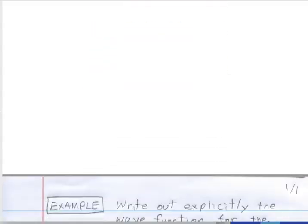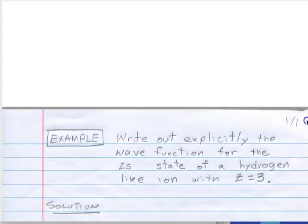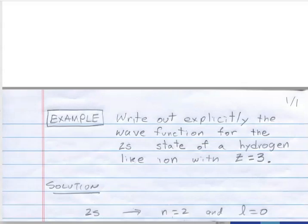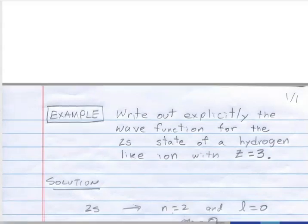Another simple problem, and this one you've probably seen problems like this before. Write out explicitly the wave function for the 2s state of a hydrogen-like ion with z equal to 3. So it's a single electron ion with z equal to 3.